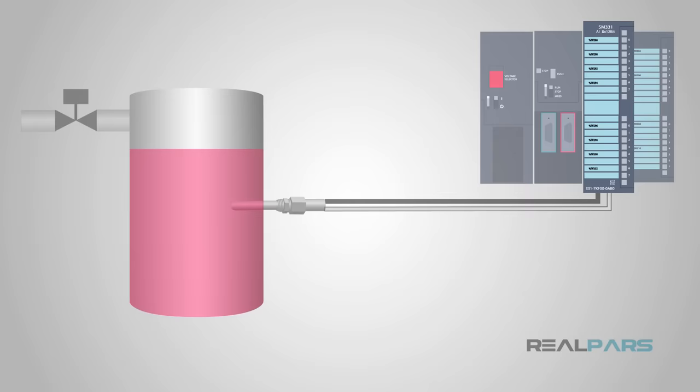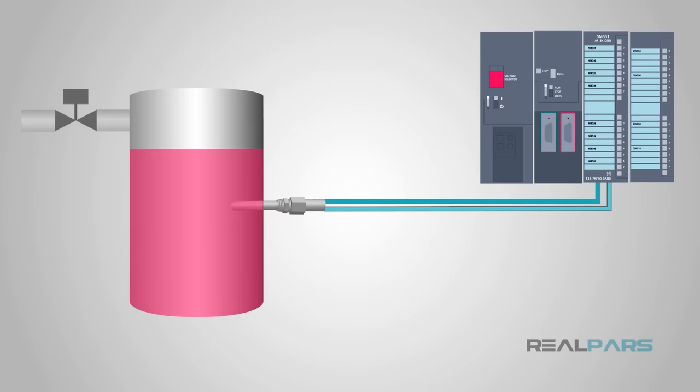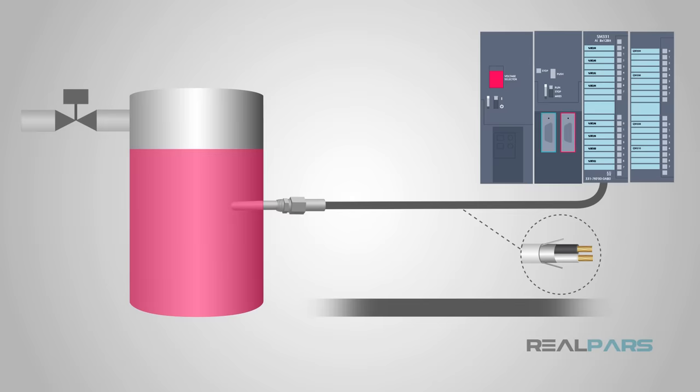The wires used to connect the thermocouple to the module must be made specifically for that type of thermocouple. The wrong kind of wire will make the signal useless. Because the signals are at such a low voltage, the wires need to be well shielded and carefully routed away from higher voltage wiring.